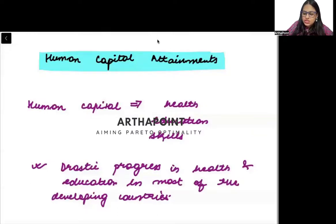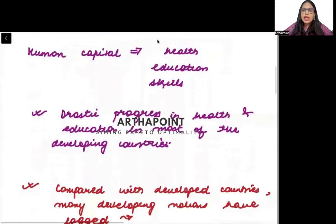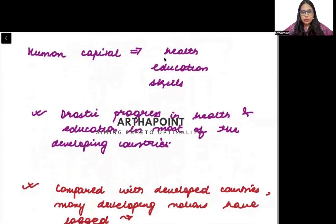Let us now talk about the second main key similarity and difference among countries, which is human capital attainment. Human capital basically is the health and education of people — how much people's health and educational level is, how much skill development is, and how much they have adapted themselves to the latest technology.